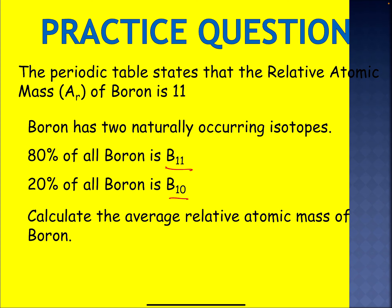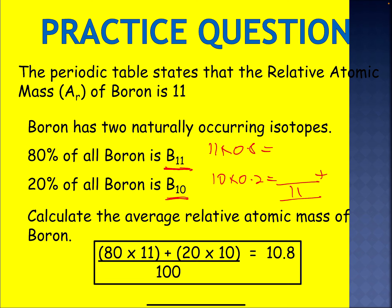Okay, so looking at this: boron-11 is 80% of the mixture, so 11 × 0.8 gives you one answer. Boron-10 is 20%, so 10 × 0.2 gives you another answer. If you add both answers you should get 11. The answer is actually slightly different, which has been rounded up to 11.